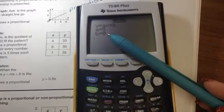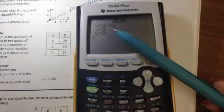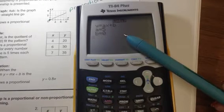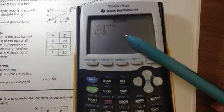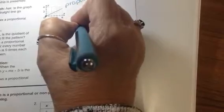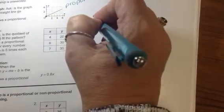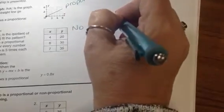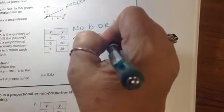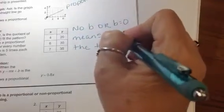So if it goes through the Y at 0, it is proportional. So if we put a table in our calculator, and it gives us a B of 0 or a Y-intercept of 0, that means that the table is proportional. Okay? So if it comes up with a 0, then we have a proportional table. So let's talk about that. No B or a B equals 0 means that the table is proportional.